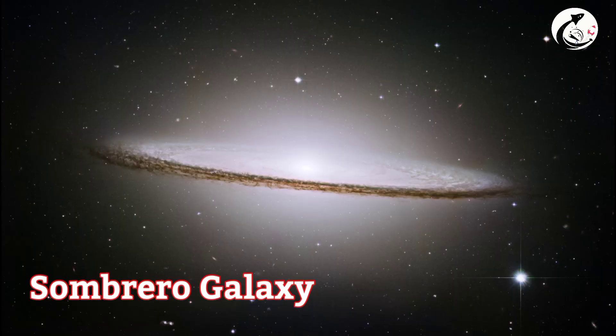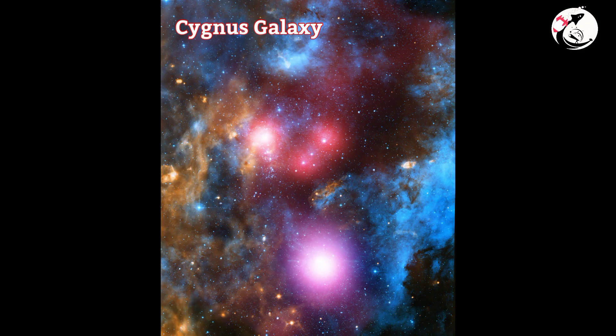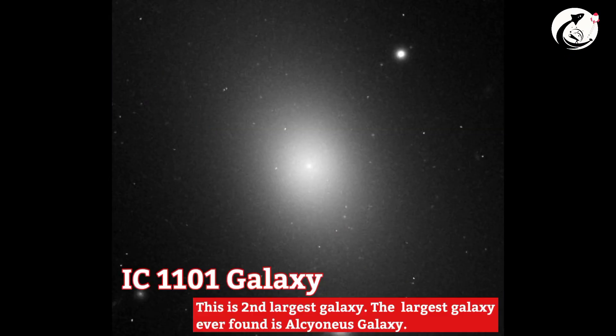Some of the examples of elliptical galaxies are: Sombrero galaxy, Cygnus galaxy, M87, and IC1101.